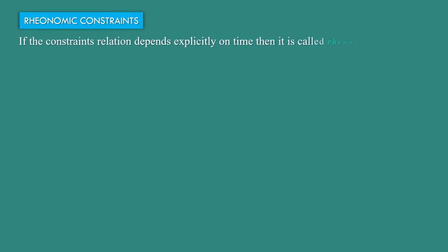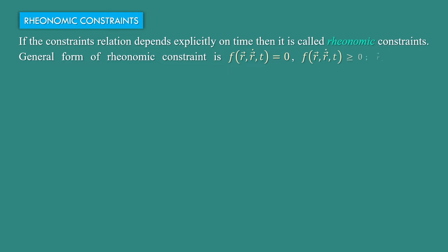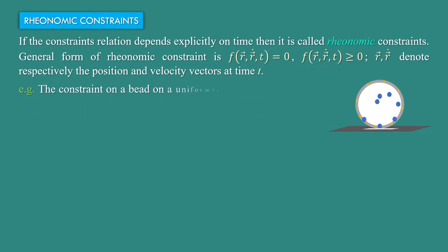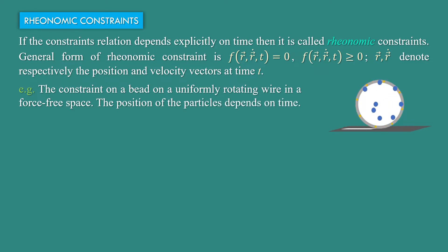Rheonomic constraints: if the constraint relation depends explicitly on time, then it is called a rheonomic constraint. The general form of rheonomic constraints is f(r⃗, r⃗̇, t) = 0, or f(r⃗, r⃗̇, t) ≥ 0, where r⃗ and r⃗̇ denote respectively the position and velocity vectors at time t. For example, the constraint on a particle on a uniformly rotating wire in a force-free space, where the position of the particle depends on time.